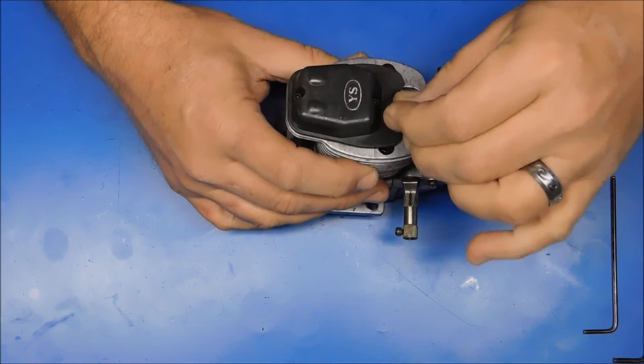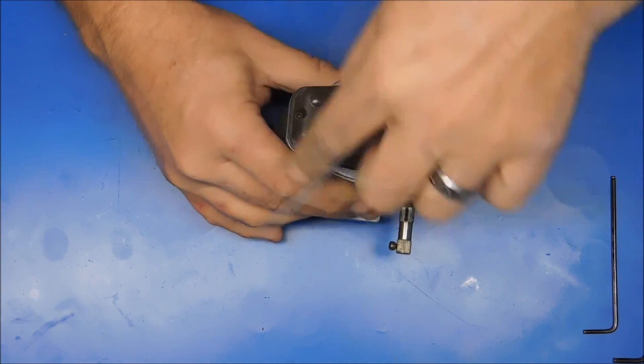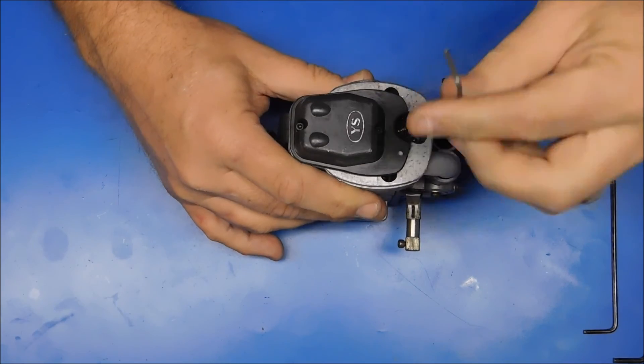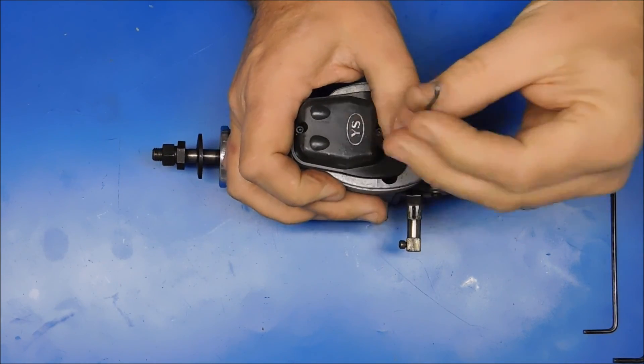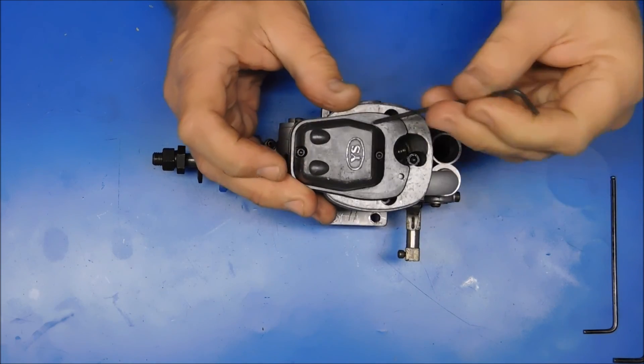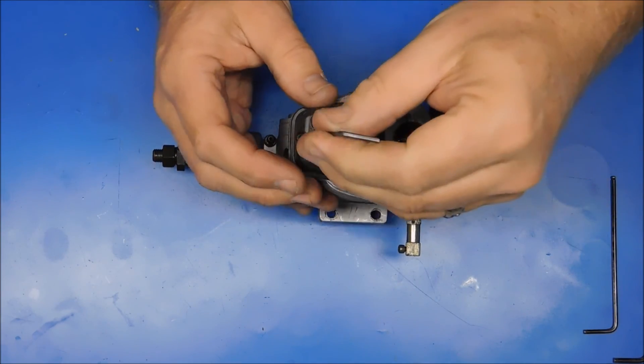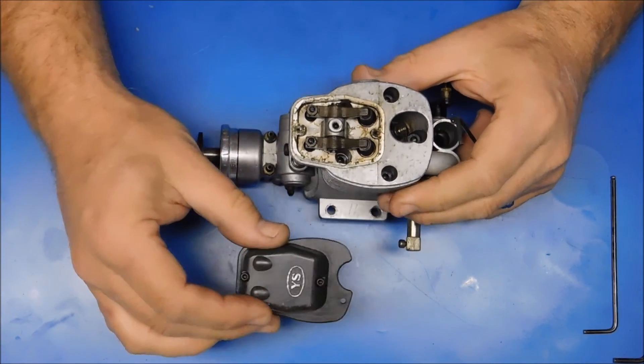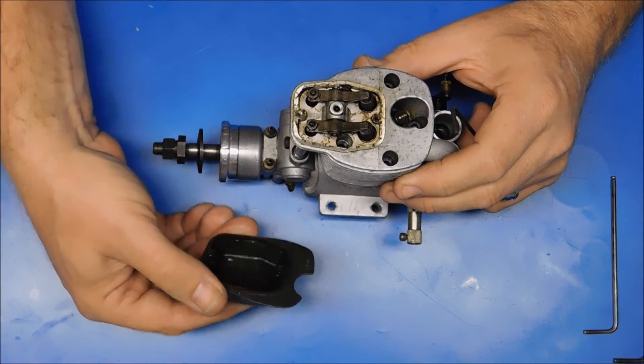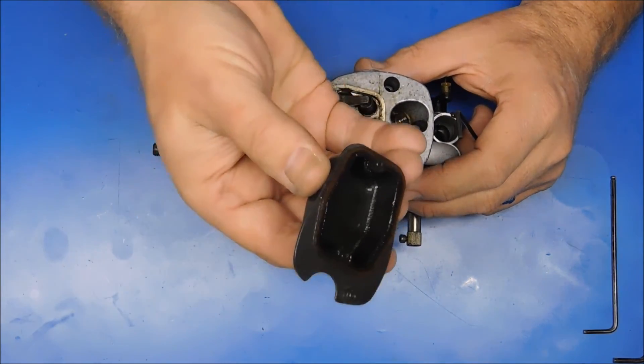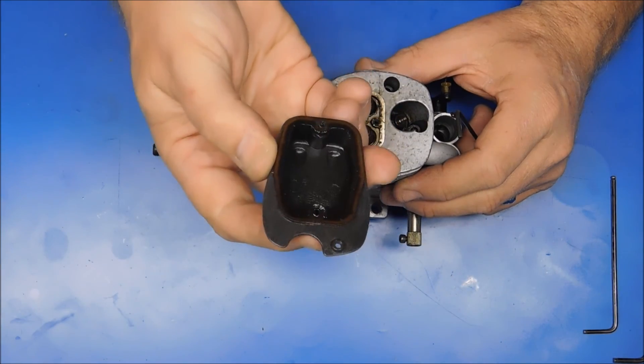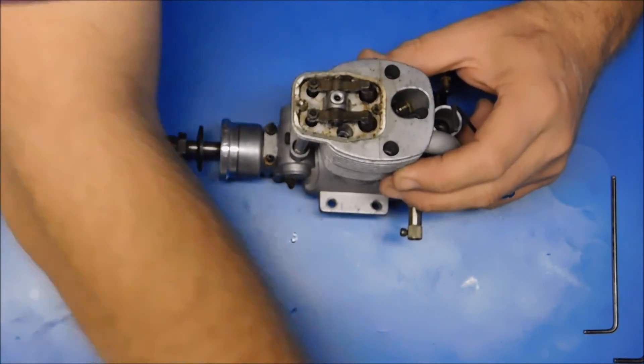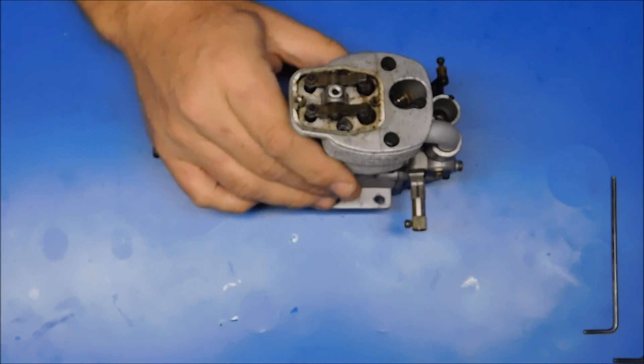So without further ado, let's begin by removing this valve cover, which is an interesting piece. This is interesting because it has this flared out area almost like a fireman's hat. So here's our valve cover, and it looks like there is a gasket on it, which I'm not going to disturb.